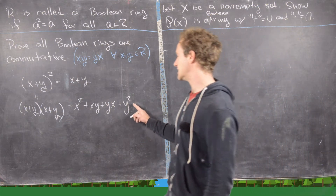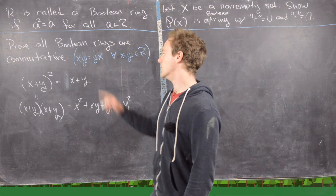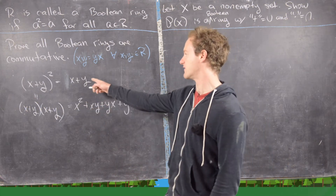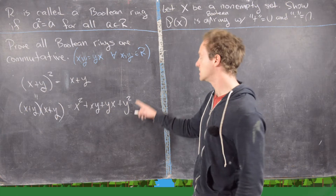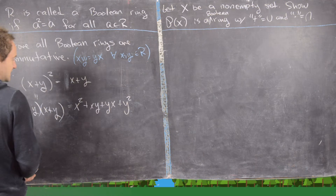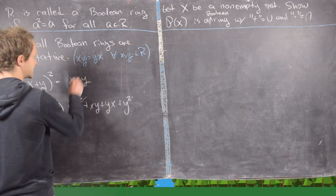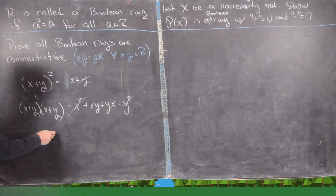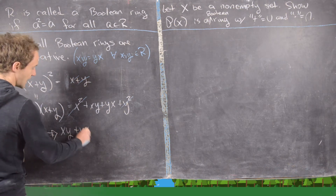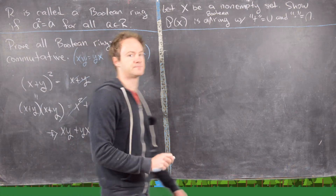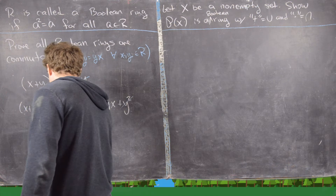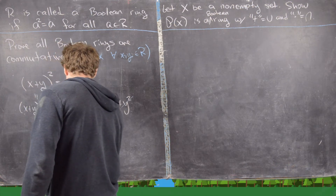We have x squared and y squared on one side and x, y on the other. Since we're in a Boolean ring, x squared equals x and y squared equals y, so we can cancel these terms from both sides, giving us xy plus yx equals 0, which means xy equals negative yx.